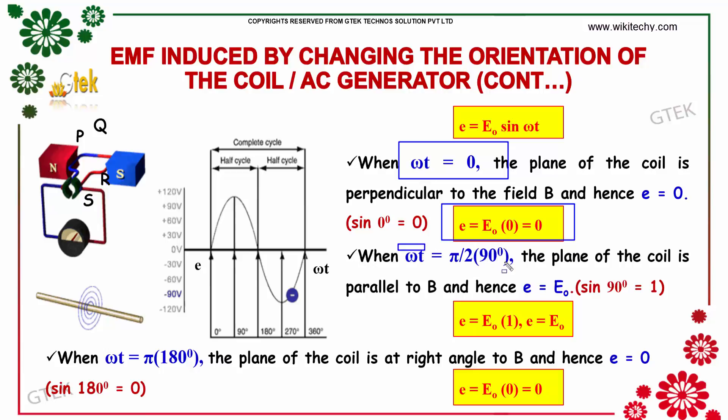If omega t equals 90 degrees, you will be getting E equals E0 into sin 90 degrees. Sin 90 degrees equals 1, so E equals E0.